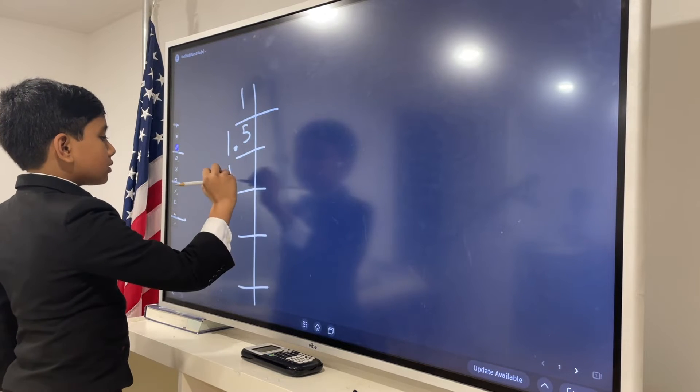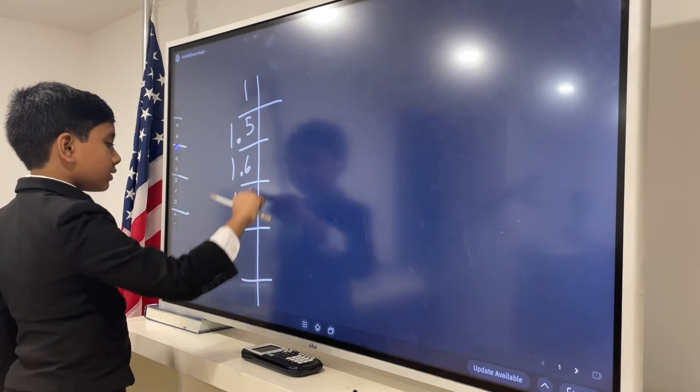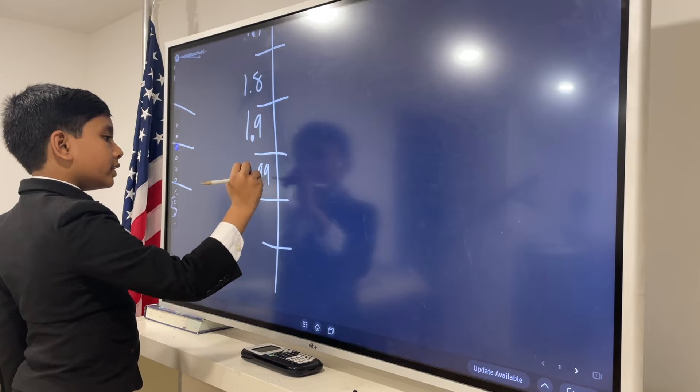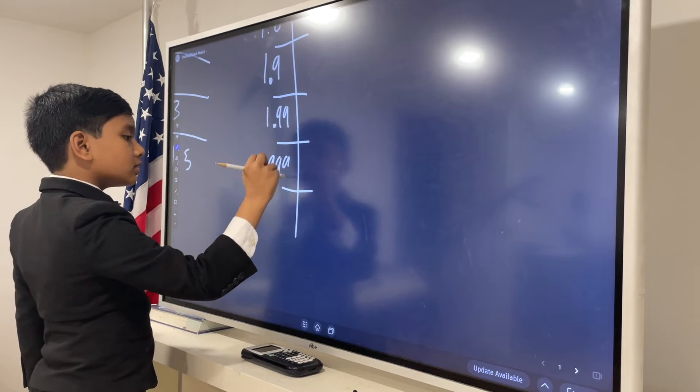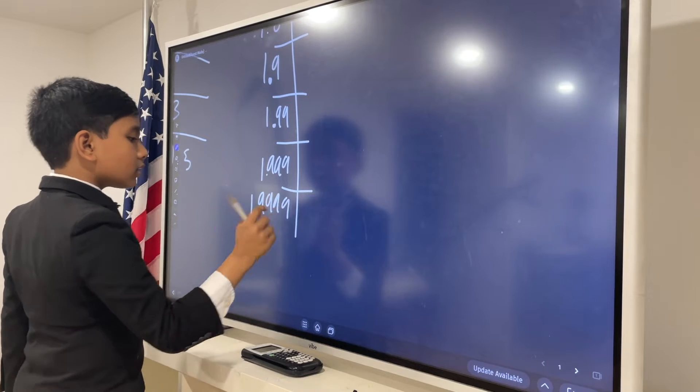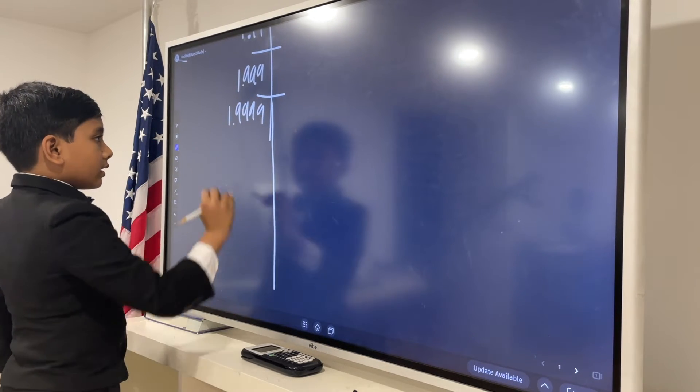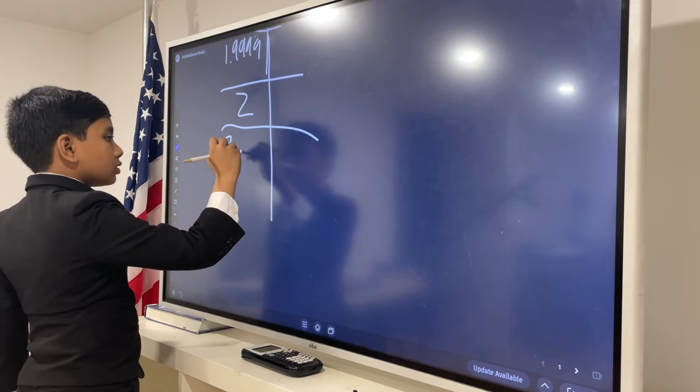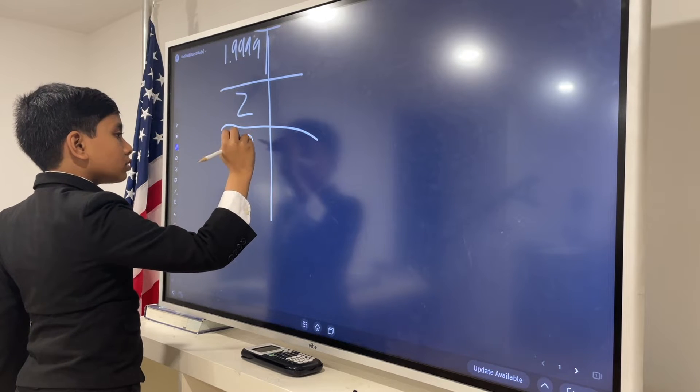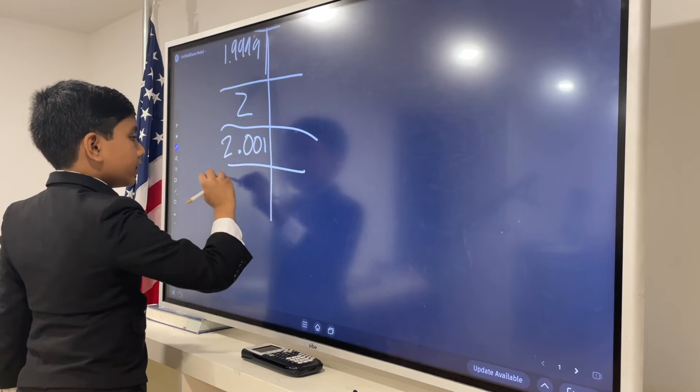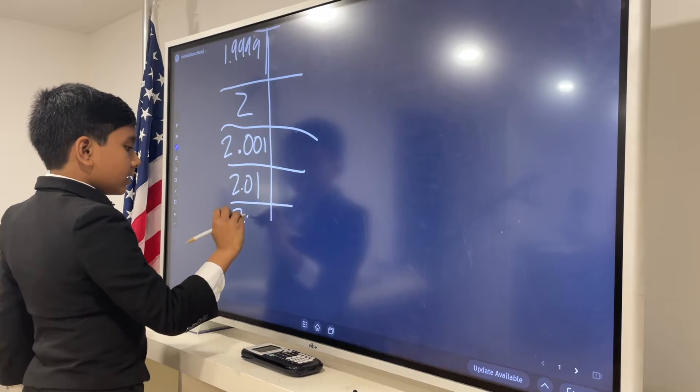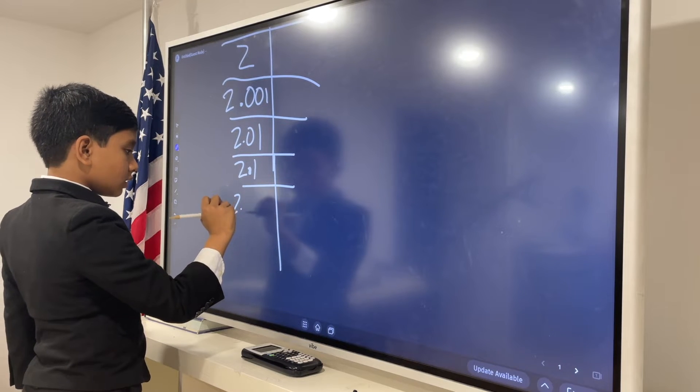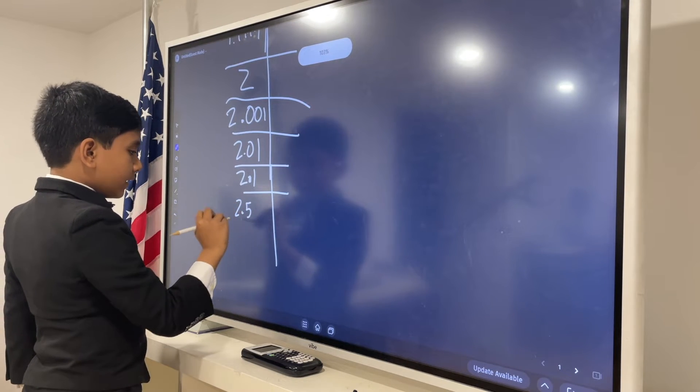So, 1.6, 1.7, 1.8, 1.9, 1.99, 1.999, 1.9999. And then we'll try, you know what, 2, and then 2.0001, 2.001, 2.01, 2.1. And that's it.